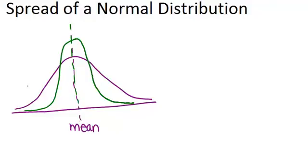Here's a third example of a normal distribution. Notice that this red graph is much more spread out than either the purple or the green.